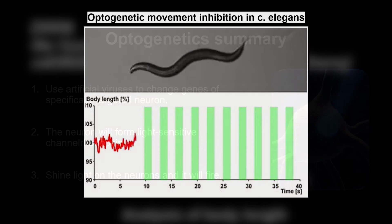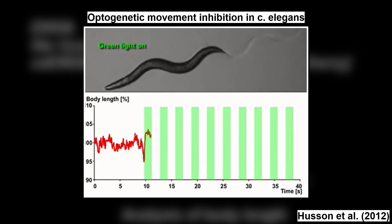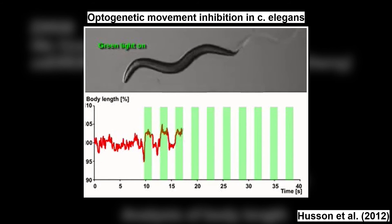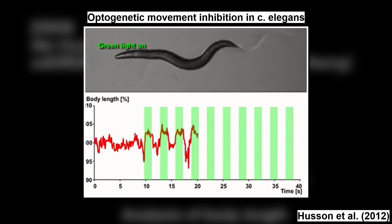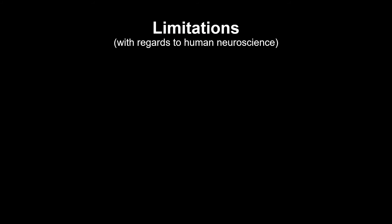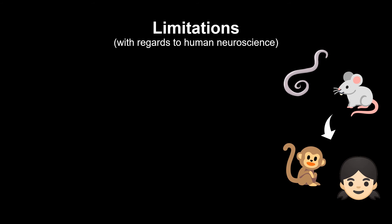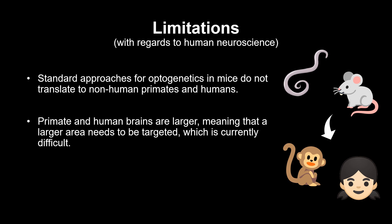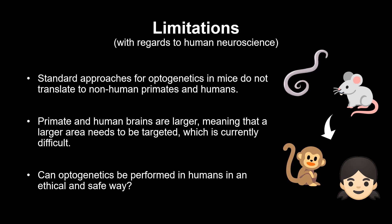It is also worth pointing out that there are other light-sensitive ion channels, such as halorhodopsin and archaerhodopsin, which will inhibit the cell if exposed to light. Optogenetics can become a game-changer in treating neurological and psychiatric disorders in the future. However, the translation from research in invertebrates and small mammals to larger mammals, such as primates and humans, proves to be quite difficult. The standard strategies used in mice to express opsins cannot be directly applied to primates. Furthermore, the brains of primates and humans are much larger and more complex, and there is also the ethical question of whether such research would be appropriate to conduct in humans.